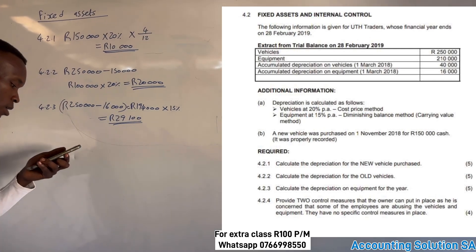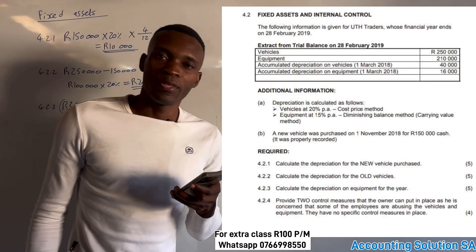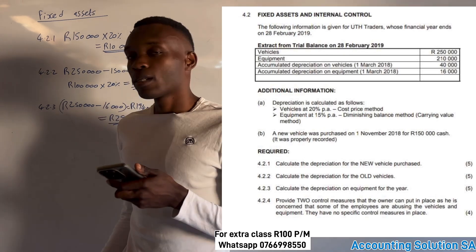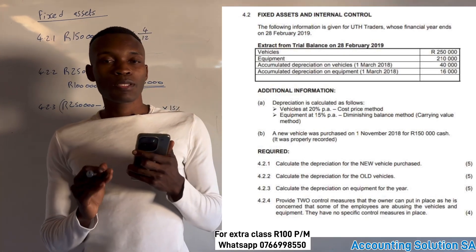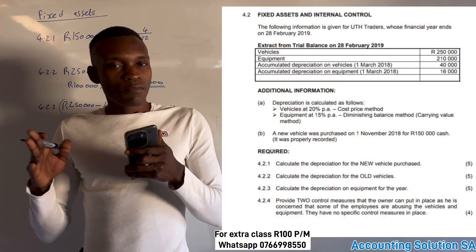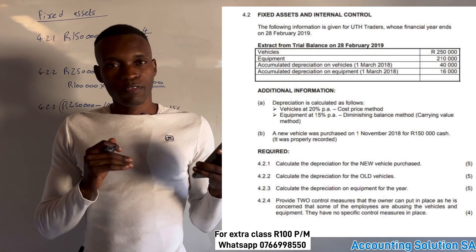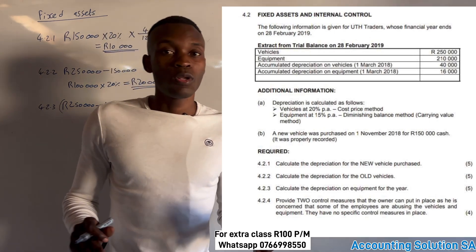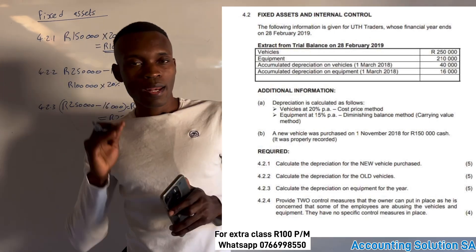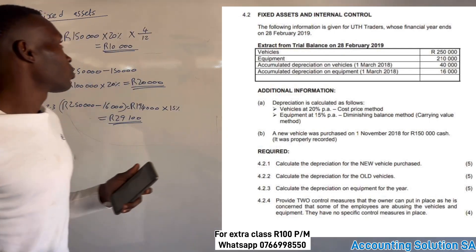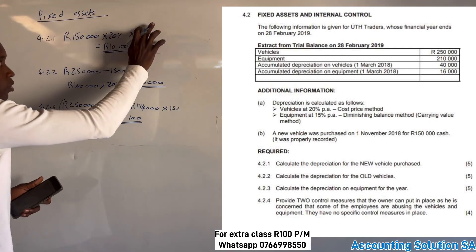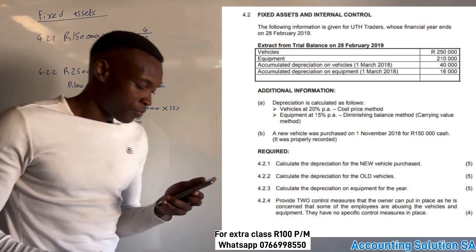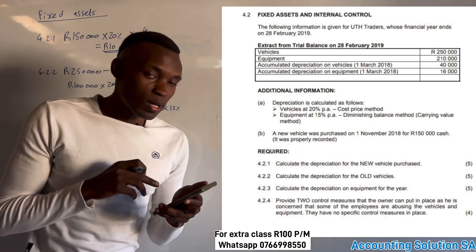To summarize the methods: for diminishing balance, subtract the previous accumulated depreciation first. For cost price method, just multiply by the percentage only — unless it is a new asset purchased during the year, in which case you also multiply by the number of months over 12. It's very simple.